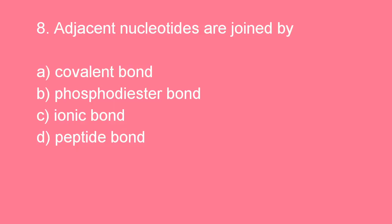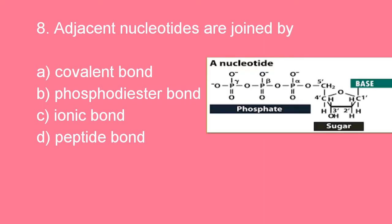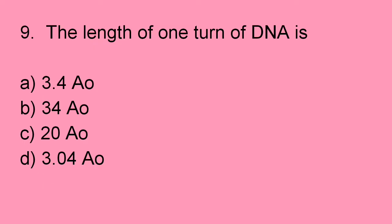Next question: Adjacent nucleotides are joined by phosphodiester bonds. Option B is right.